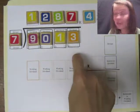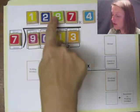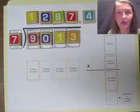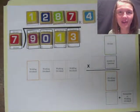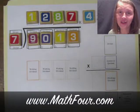7 into 9,013 is 1,287 remainder 4. Long division. Woo-hoo! I'm Bon Crowder with Math4.com reminding you that math is not a four-letter word.